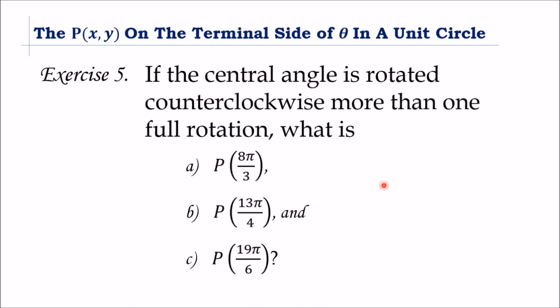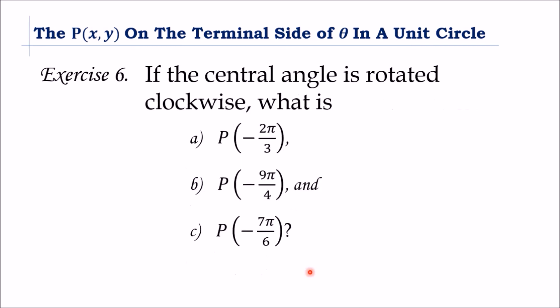If the central angle is rotated counterclockwise more than one full rotation, what is P of 8π/3, P of 13π/4, and P of 19π/6? And lastly, if the central angle is rotated clockwise, what is P of −2π/3, P of −9π/4, and P of −7π/6? Share your answers and post them below. If you have queries about the topic discussed, post them below as well. Thank you.